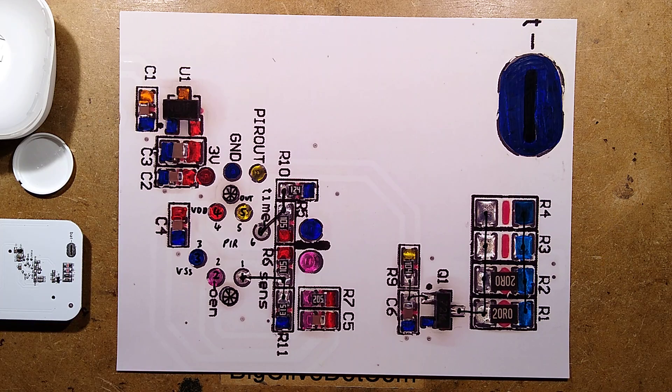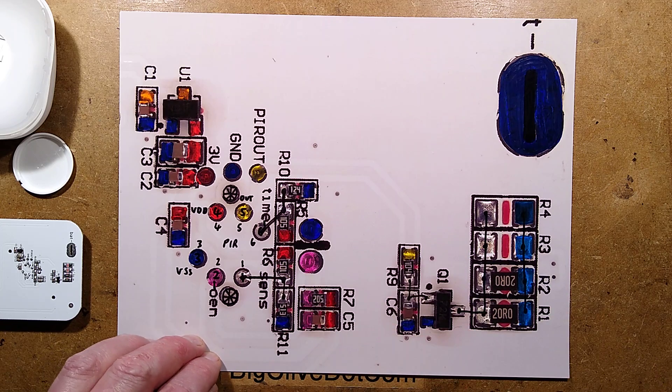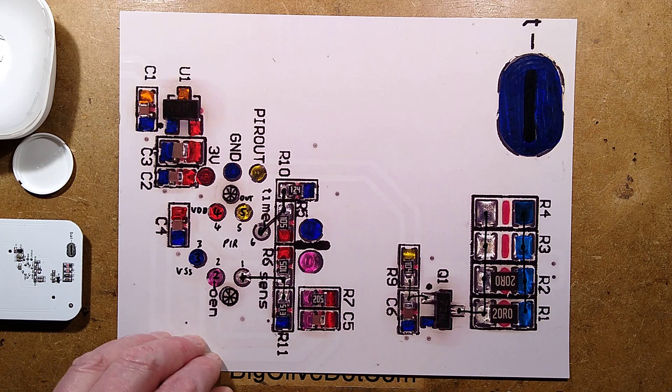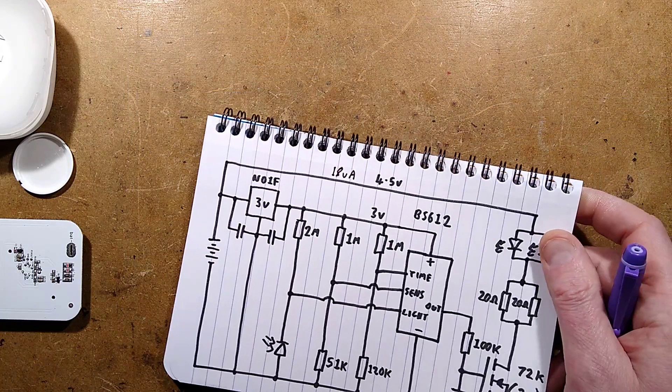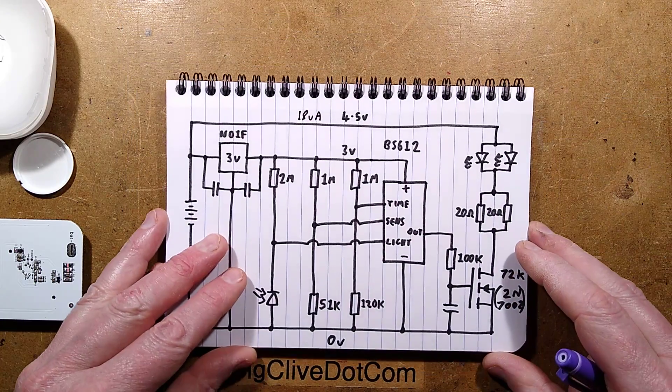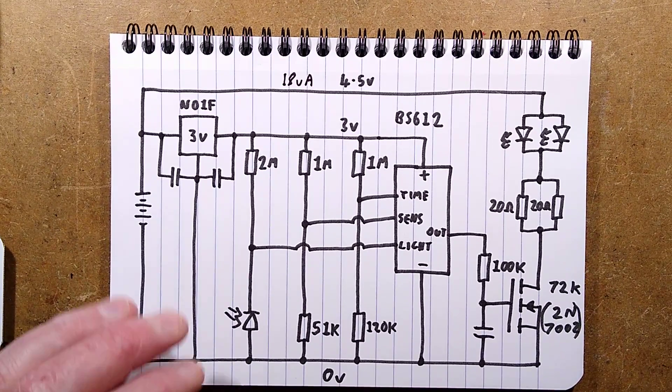Let me show you the schematic. I should mention I found a datasheet for that chip, the BS612 passive infrared sensor. I found it at Adafruit. Adafruit actually stocks those. They're very affordable. So if you need a passive infrared module, Adafruit may be where you need to go.